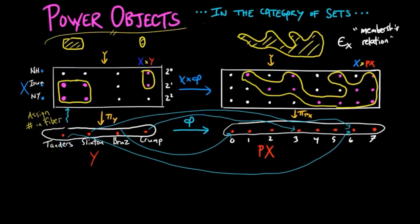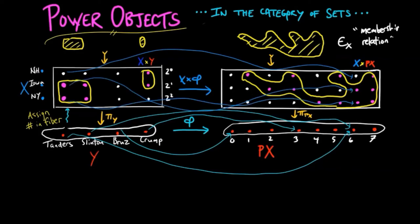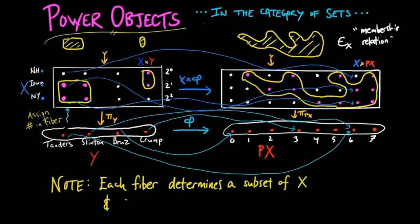In other words, the patterns of pink and white dots above Tanders corresponds precisely to the pattern of pink and white dots in the fiber above 6 in the power set of X. So we see that each fiber above elements of Y determines a subset of X, and phi is uniquely determined by it.